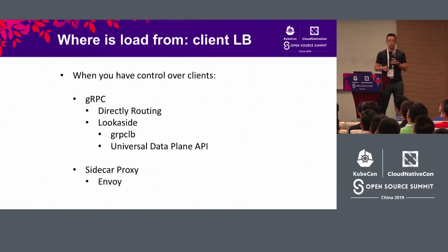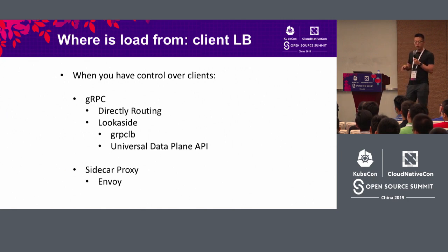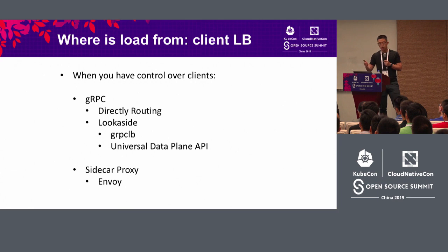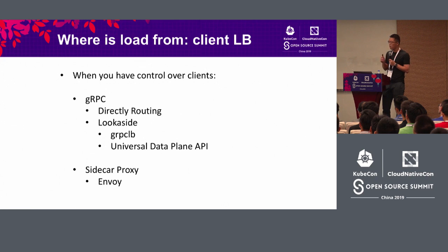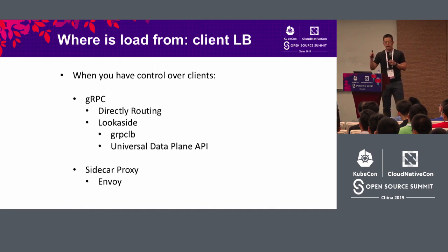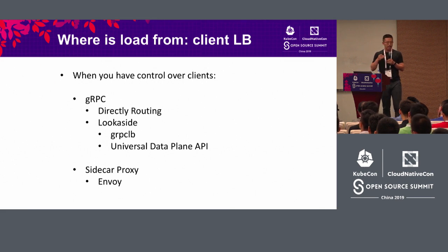On the client side, if you have complete or partial control over clients, you can start load balancing already. In this case, you can use gRPC by making calls to the gRPC library in your application code, and gRPC itself is smart enough to directly route requests to different back-end servers. If you feel that gRPC shouldn't be responsible for this load balancing decision, they also provide something called a look-aside load balancer, so the gRPC client can talk to a third-party entity that implements the gRPC-LB protocol and ask it for routing decisions. This responsibility can be fully delegated to the third party.